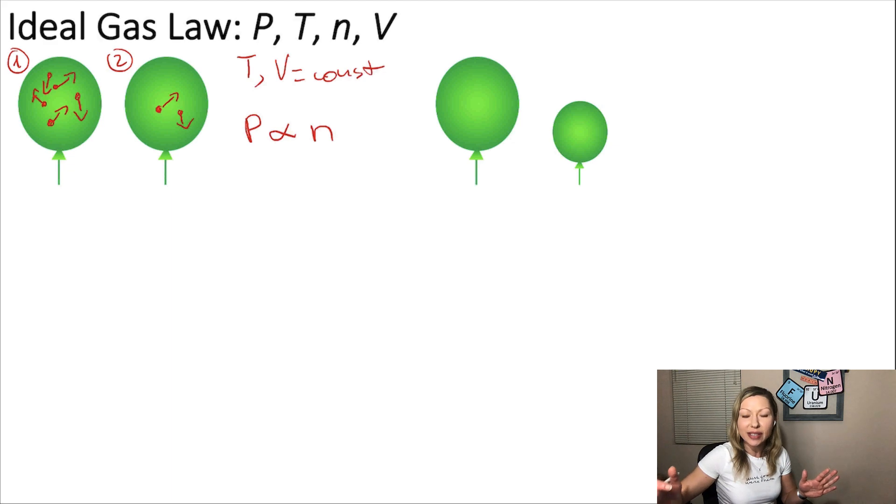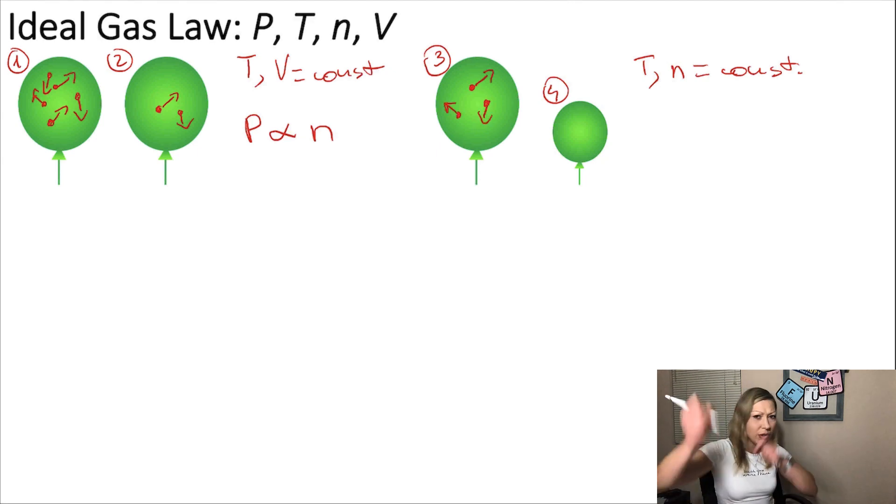Now, let's take another scenario. Let's call this balloon three and balloon four. Let's keep the temperature the same and the number of particles the same. So, those are both constant. And now, I'm going to have a large volume with, let's say, three particles zooming around and a smaller volume with the same three particles zooming around with the same speed, with the same velocity at the same temperature. What happens to the pressure as the volume decreases? Well, as the volume decreases, I'm going to have the particles bumping into the wall of the balloon more often, so the pressure goes up. This means that the pressure is actually inversely proportional to the volume.